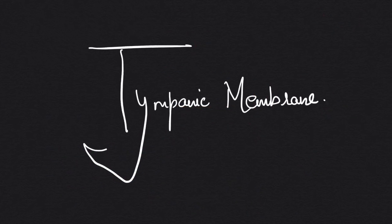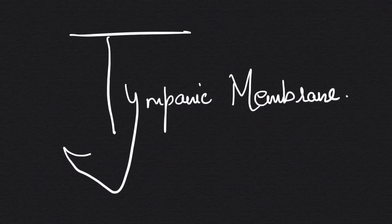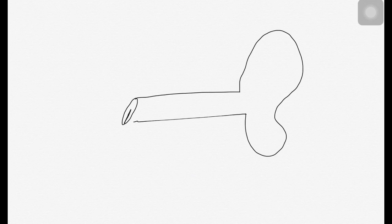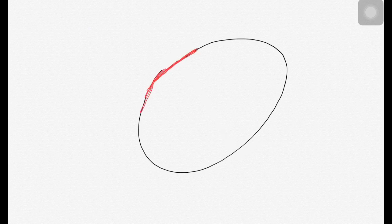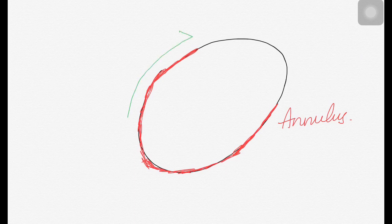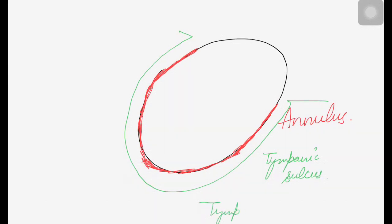The tympanic membrane is located at the other end of the external auditory canal at an angle of 55 degrees with the inferior and anterior walls. It is oval in shape — 8 to 9 mm horizontally and 9 to 10 mm vertically. Peripherally, it is thickened to form a fibrocartilaginous ring called the annulus, which sits in a groove called the tympanic sulcus in the tympanic bone. Superiorly this sulcus and annulus are absent — this is called the notch of Rivinus, part of the squamous temporal bone.